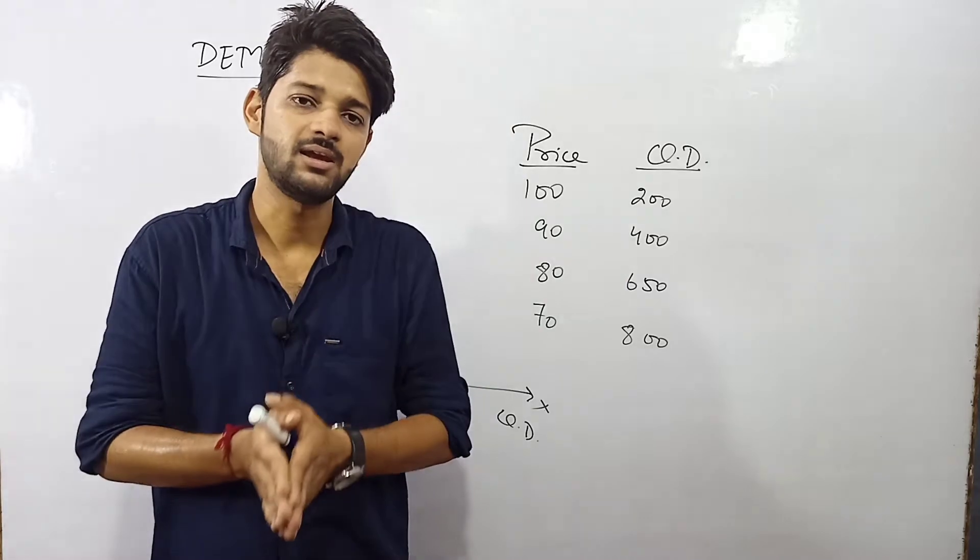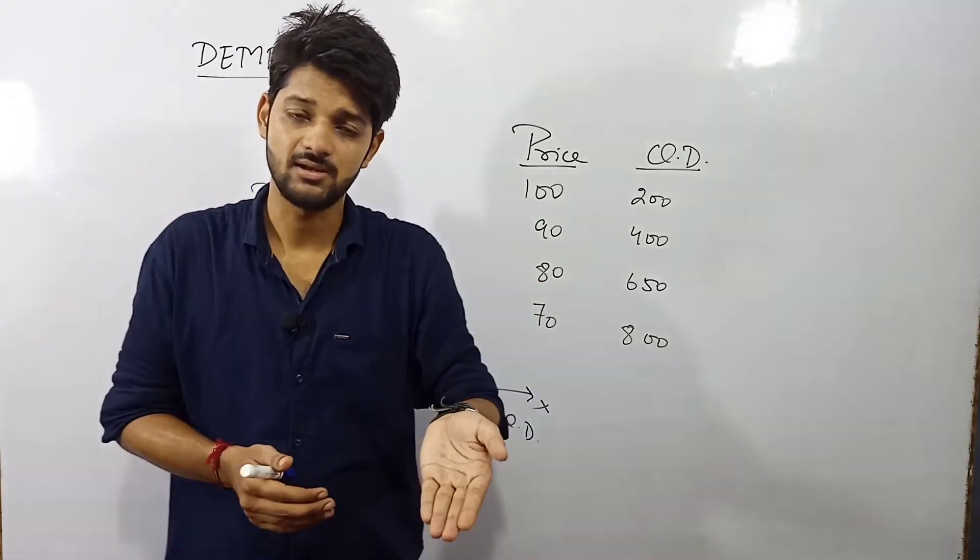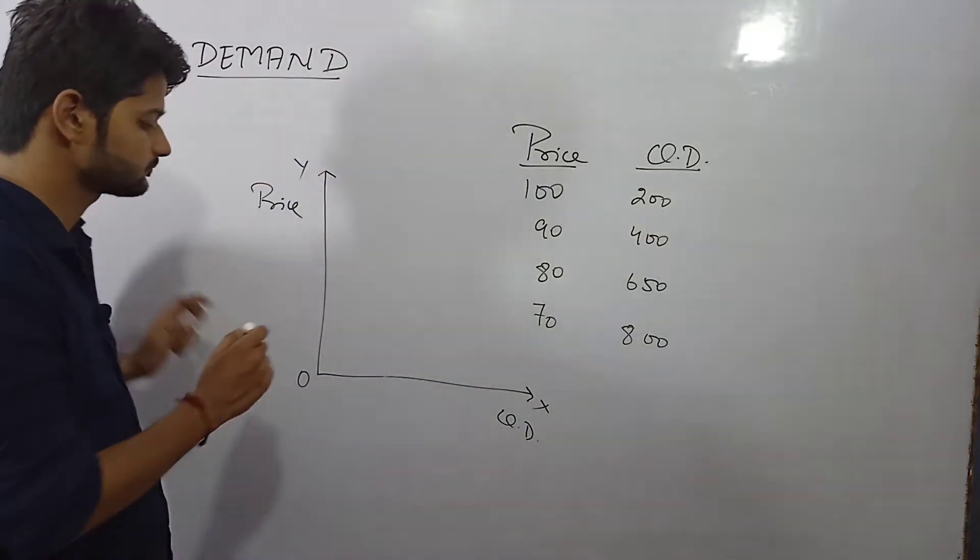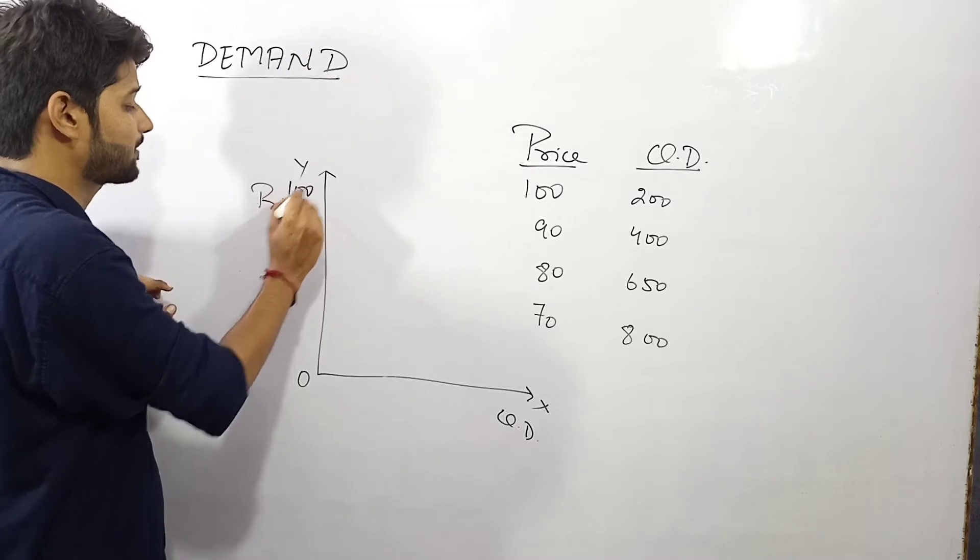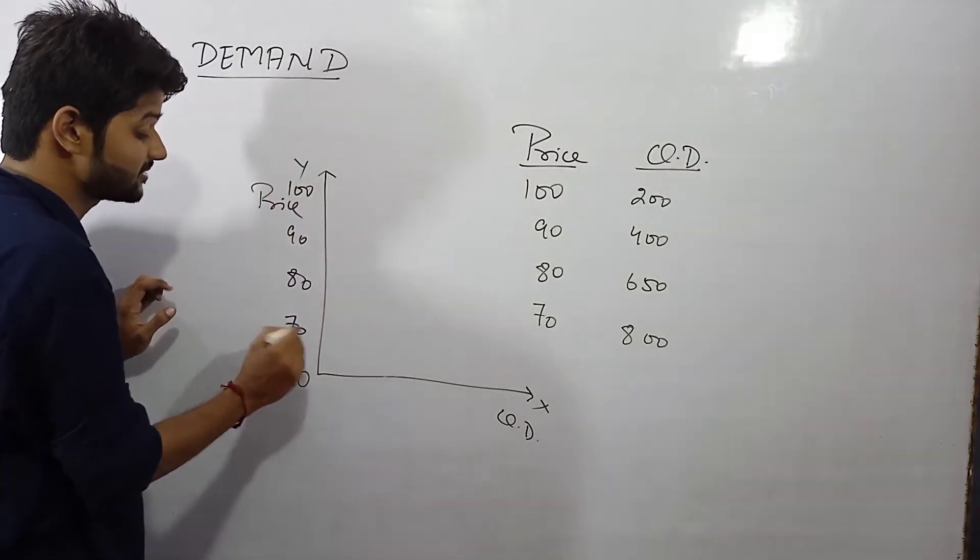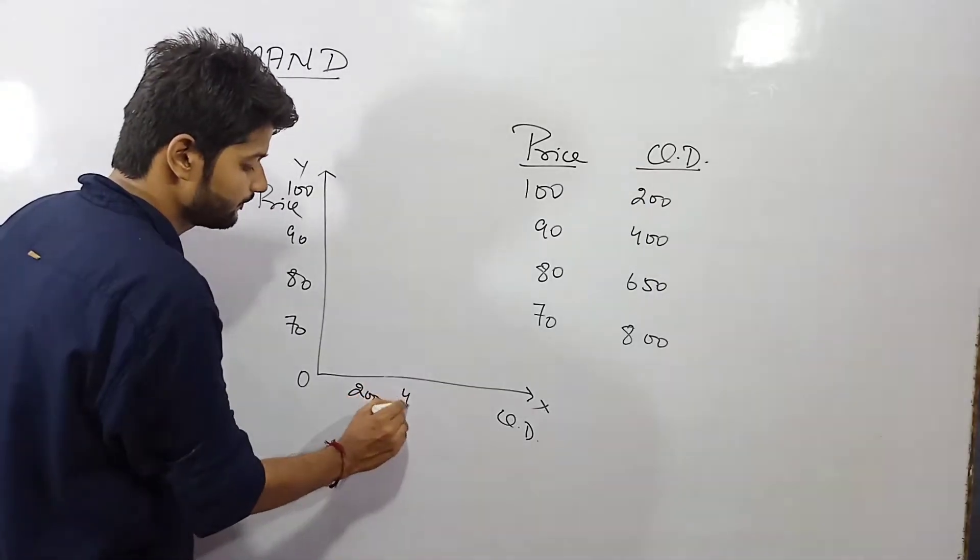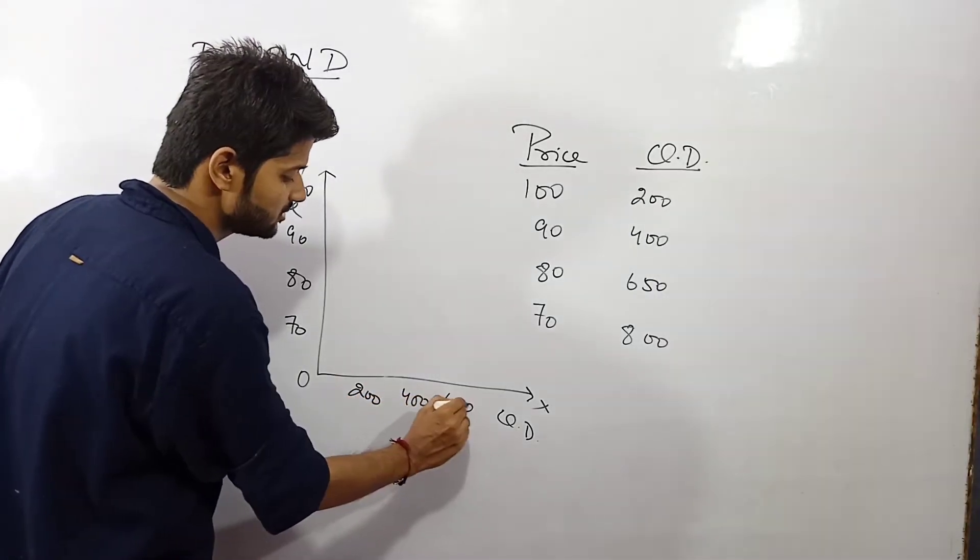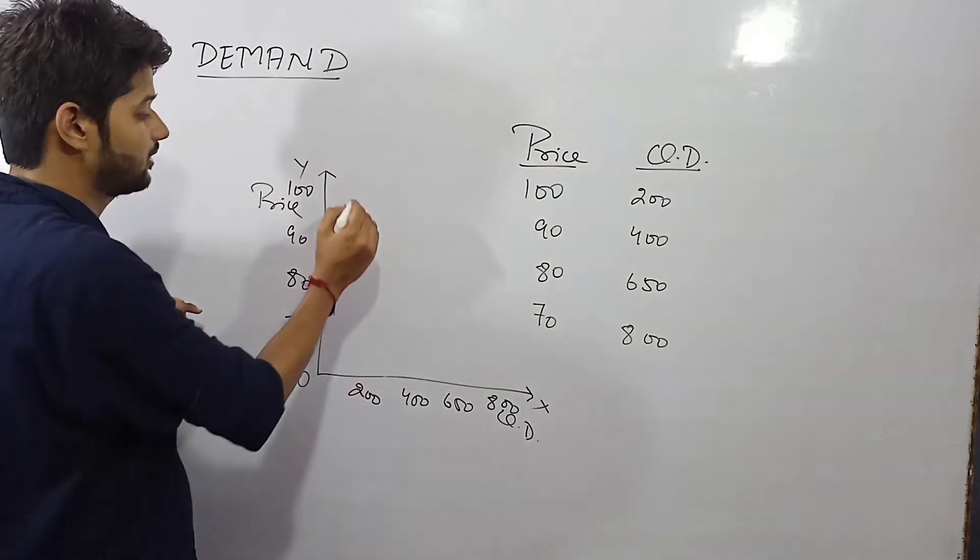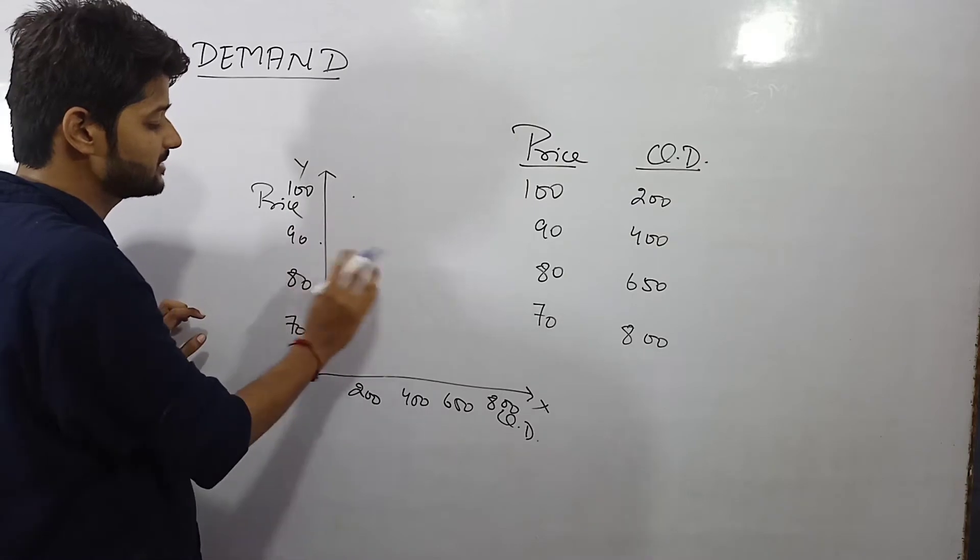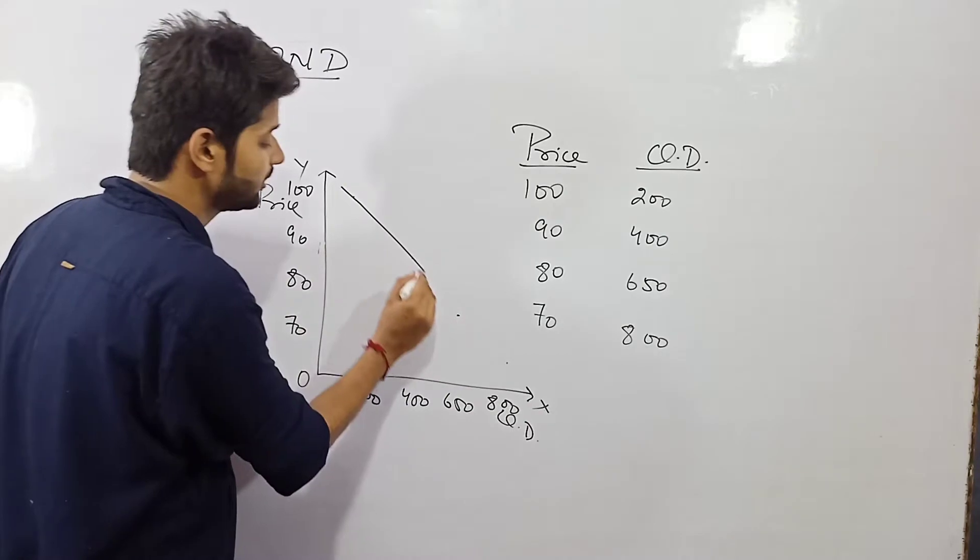So if we plot it on the graph, here we go with the quantity demand and this is the price. As the price decreases, the consumption of commodity by the consumer goes increasing. So as the price was 100, he was having the consumption of 200 units. As the price decreases, the quantity has been increased.